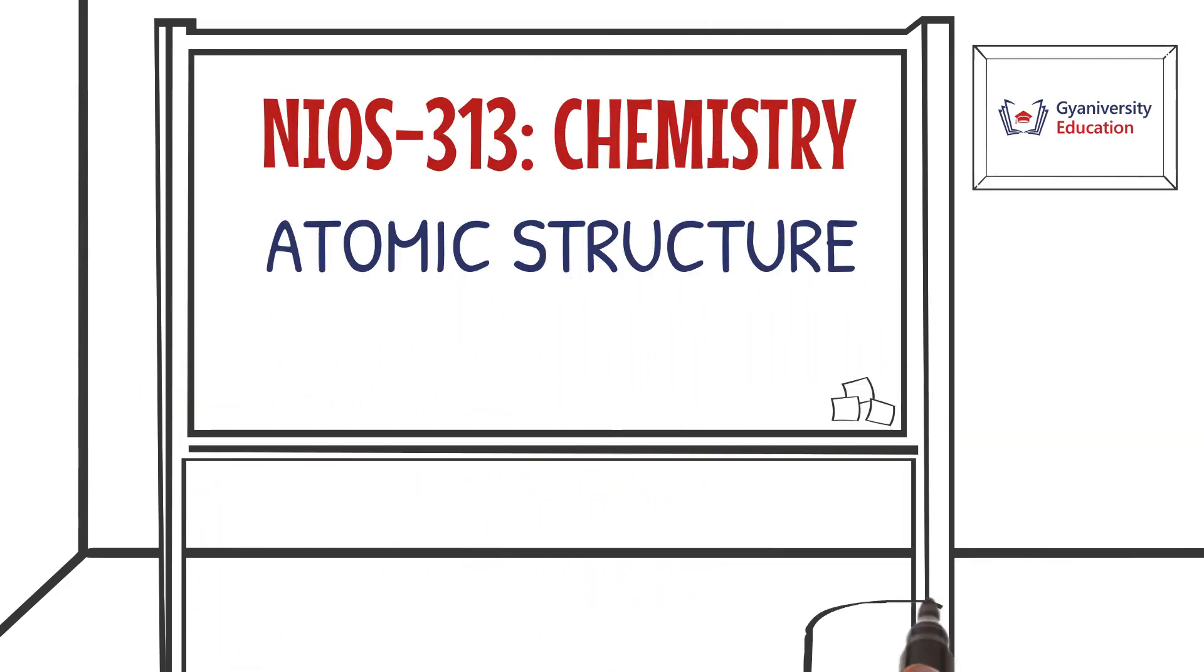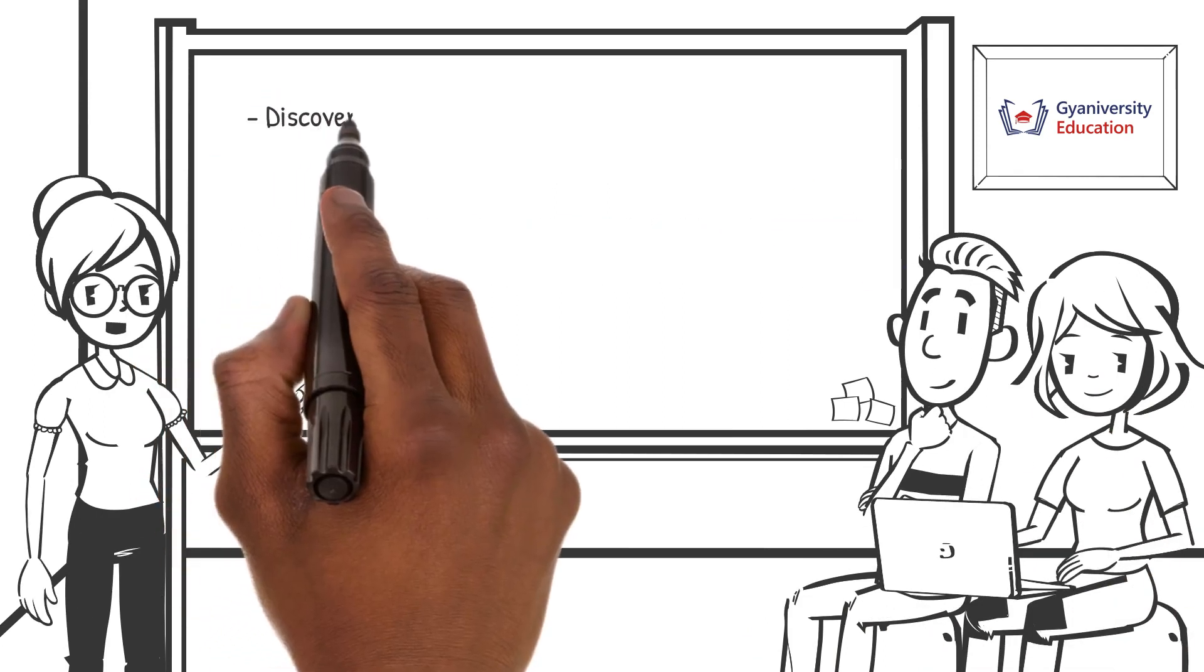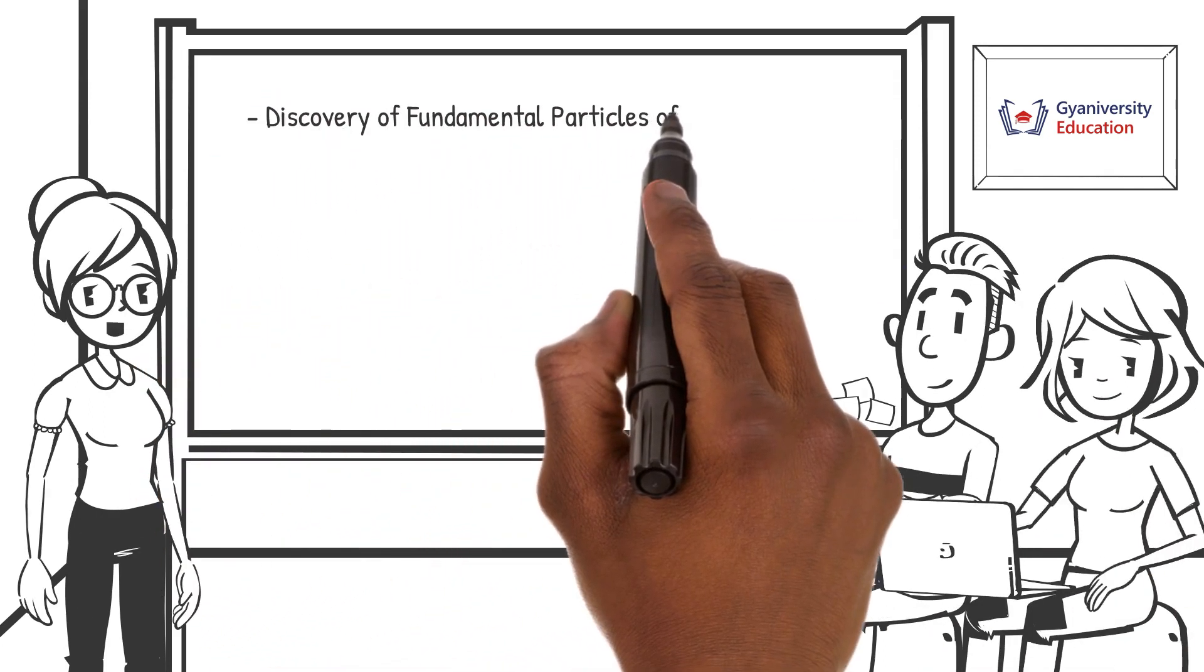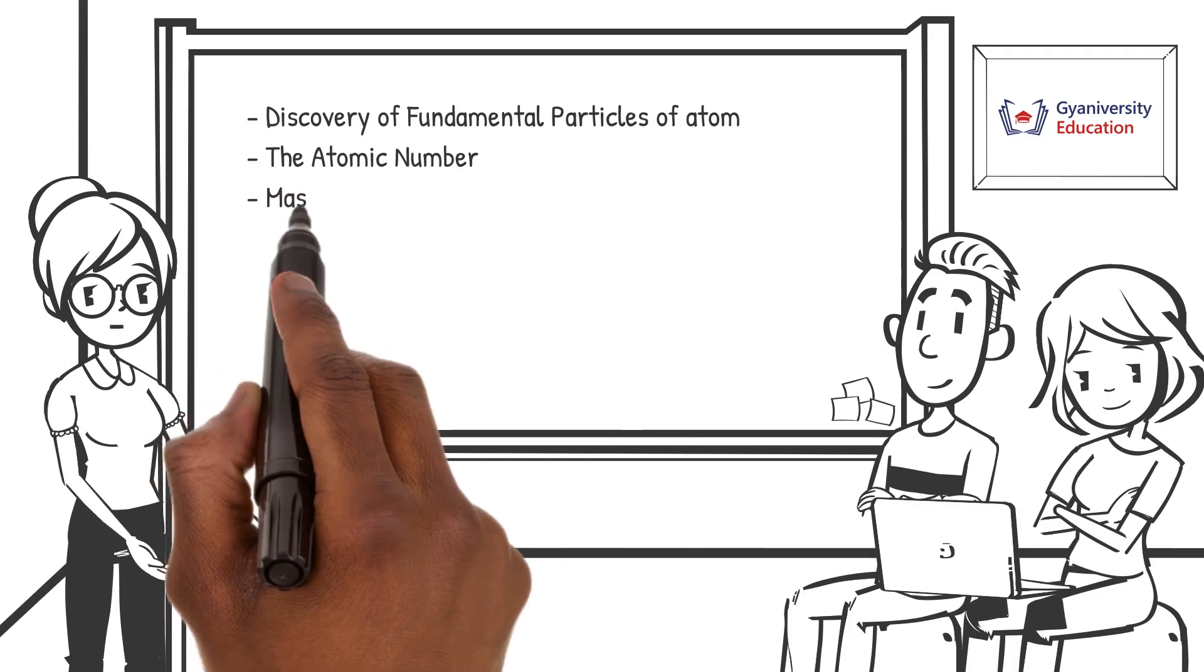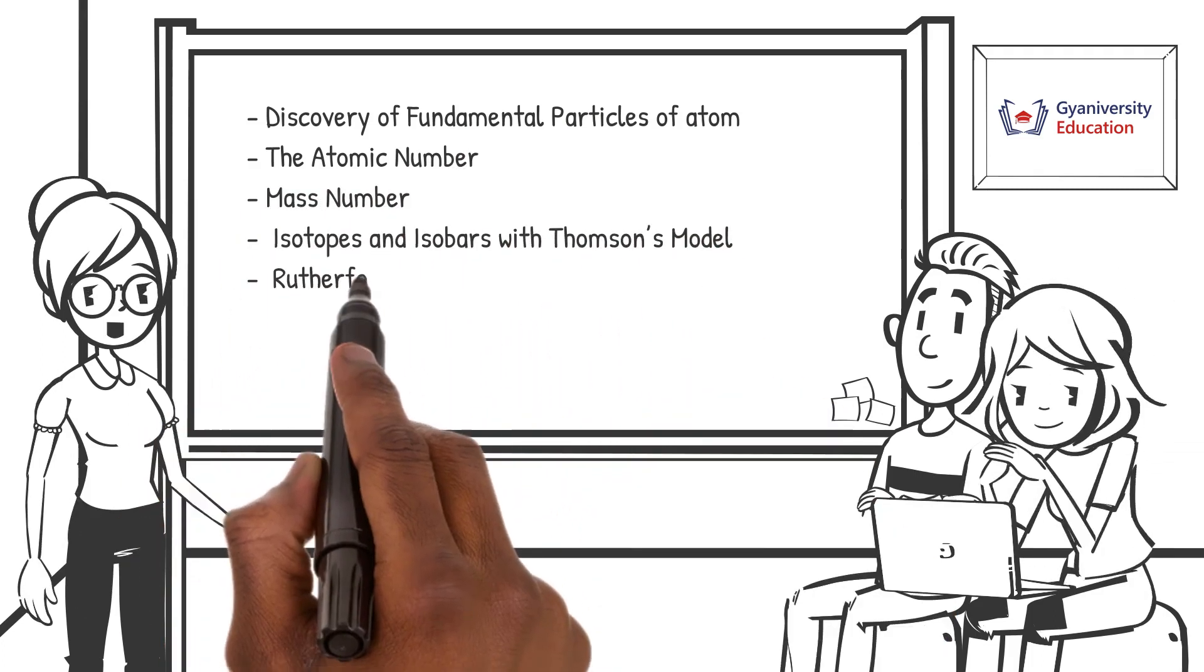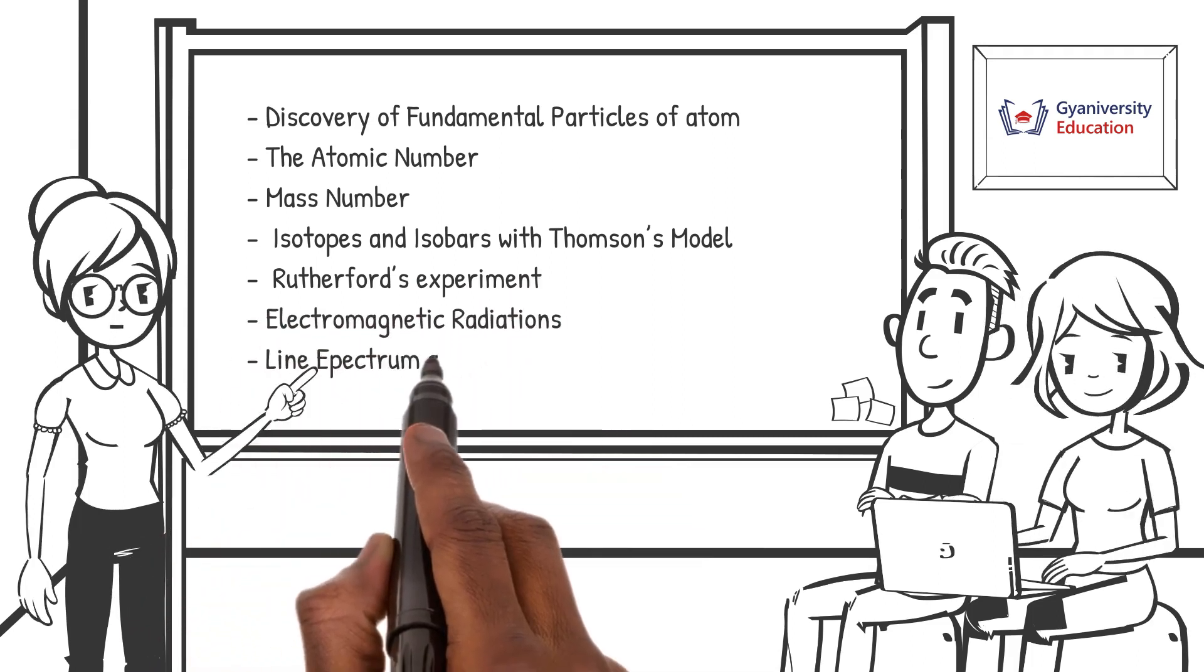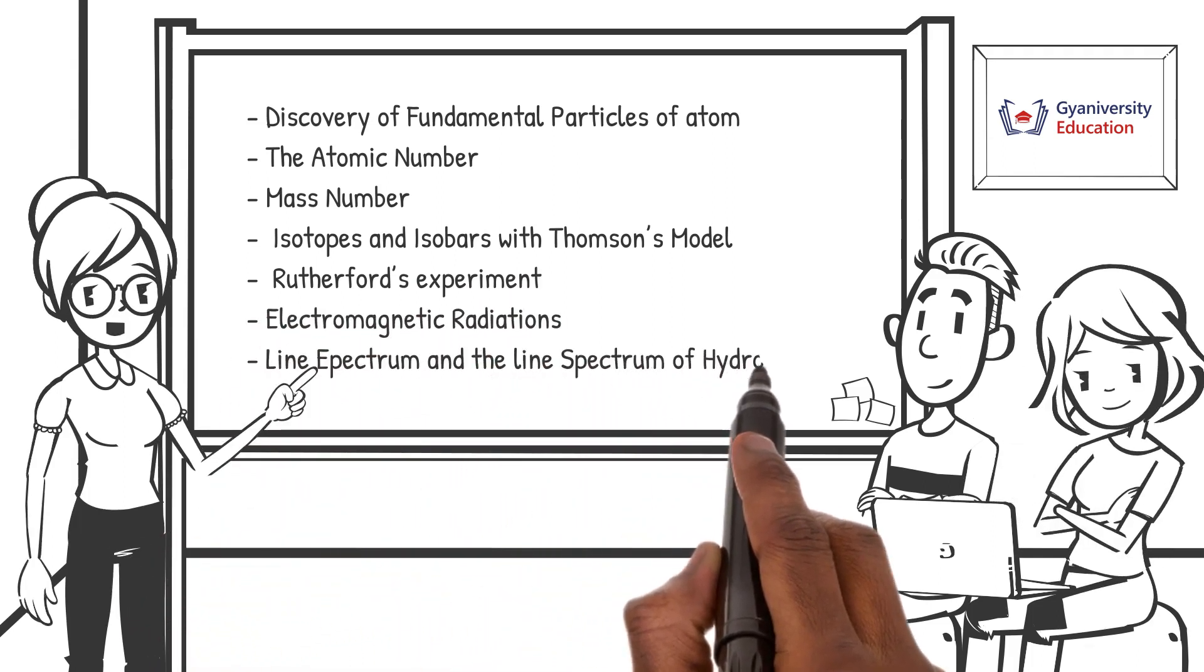Welcome to the chemistry lesson number two on atomic structure. In this lesson, you will learn about the discovery of fundamental particles of atom, the atomic number, mass number, isotopes, and isobars with Thomson's model, Rutherford's experiment, electromagnetic radiations, line spectrum, and the line spectrum of hydrogen atom.